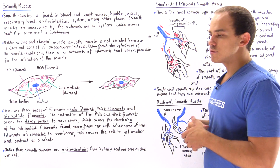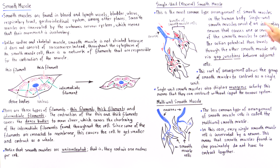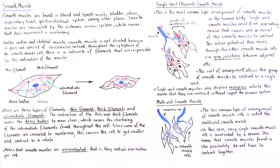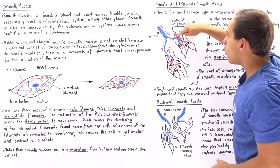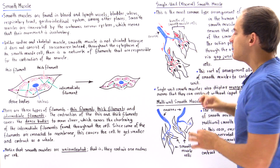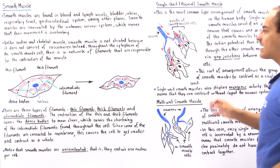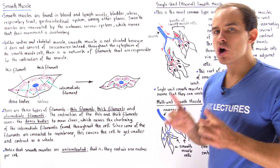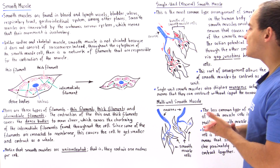The single unit smooth muscle is the most common type of arrangement in the body. It consists of an innervating neuron that innervates a single or several cells in a group. Only one or two cells are actually innervated by the neuron; all other cells are not directly connected to it. Instead, all the cells are connected via intracellular connections known as gap junctions, which allow the movement of ions and propagation of the action potential.